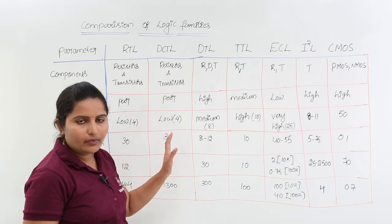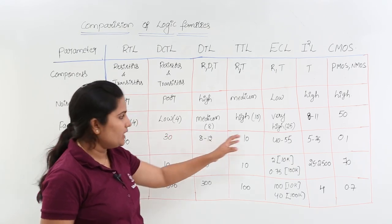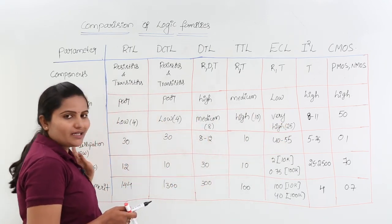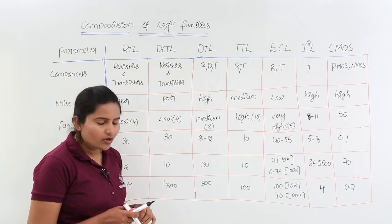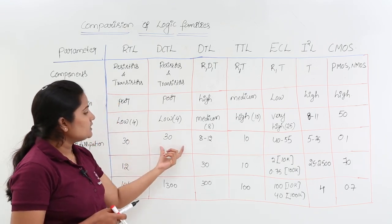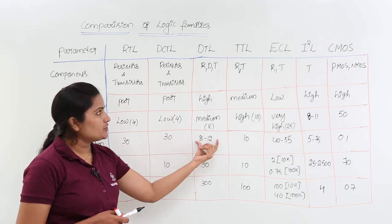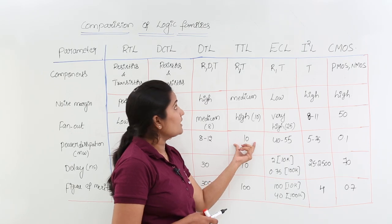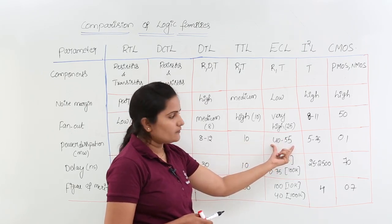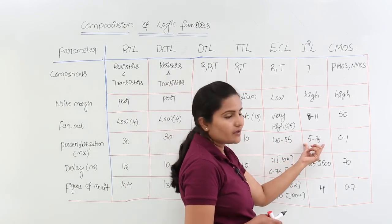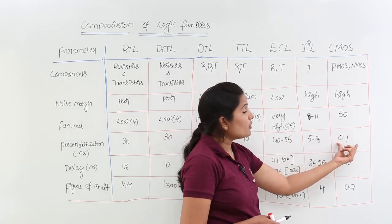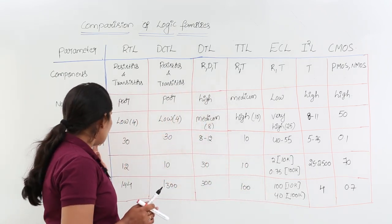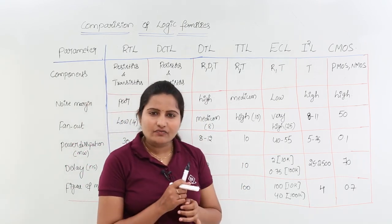Coming to power dissipation in milliwatts: RTL is 30 mW, DCTL is 30 mW, DTL is 8 to 12 mW, TTL is 10 mW, ECL is 40 to 55 mW, I²L is 5 to 25 mW, and CMOS is 0.1 mW — which is very low power dissipation.